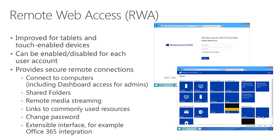Remote web access provides secure remote access back to desktop computers in the office network when you're out on the road. This is also very useful for partners who can connect to the server to do remote administration for their customers. It also provides access to the shared folders in the environment. You can optionally install a media streaming component — we talked about that in a previous module — which lets you stream music and video through a web browser from the central server. You can also define links to commonly used resources, set up by the administrator as an easy way to connect to appropriate company resources.